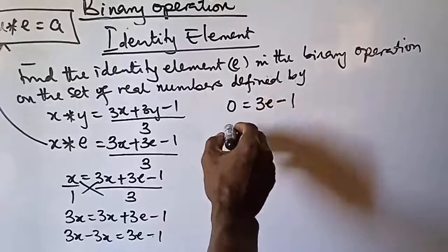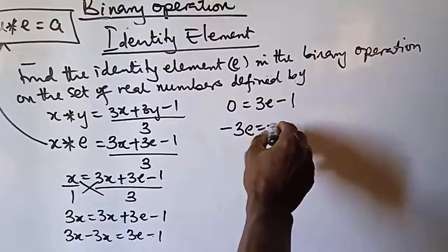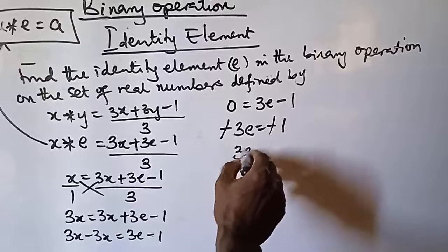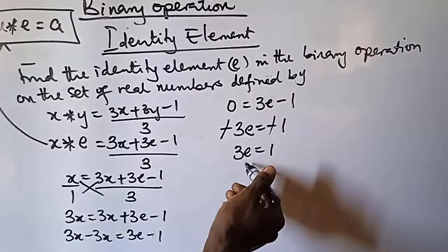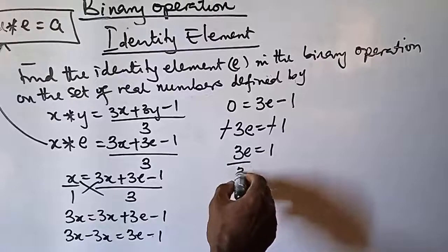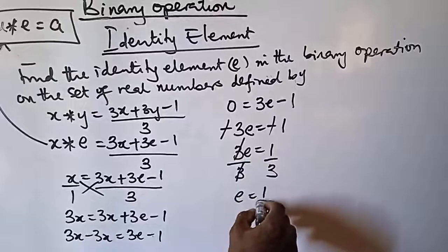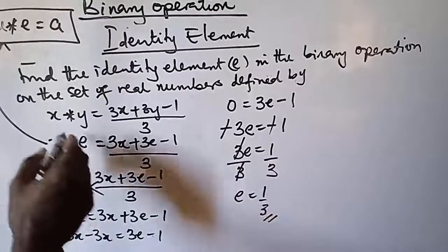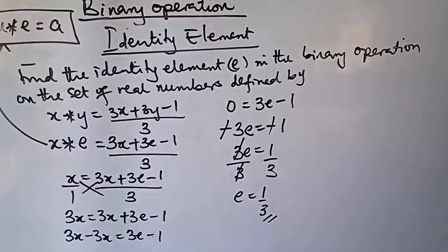So 3x − 3x = 0, giving us 3e − 1 = 0. Transposing, we get 3e = 1. Dividing both sides by 3: e = 1/3. Therefore, the identity element for this expression is 1/3.